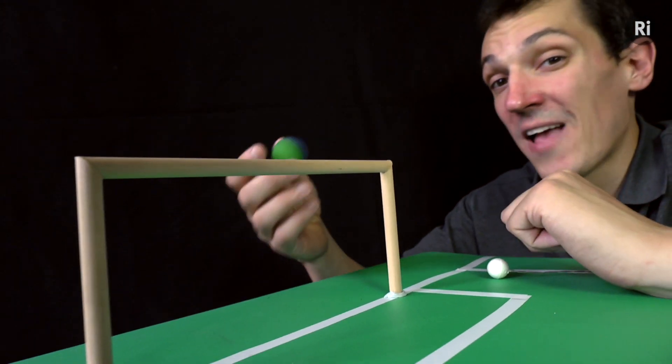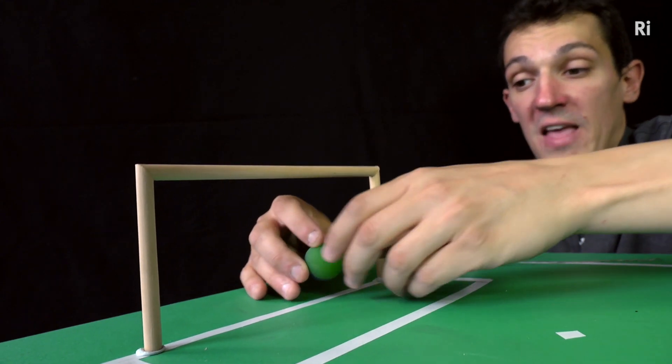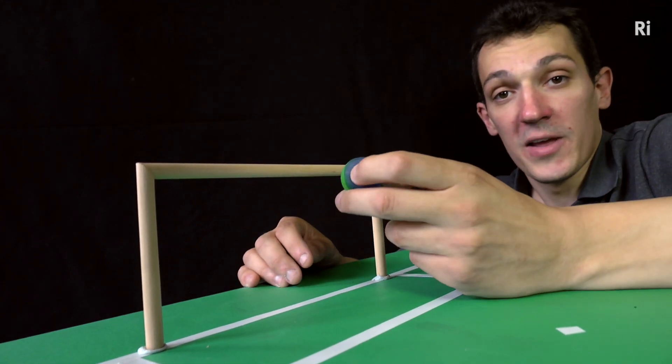Or in other words, if the ball hasn't gone in the goal, if it only lands on the line, it will bounce out without hitting the bar again.